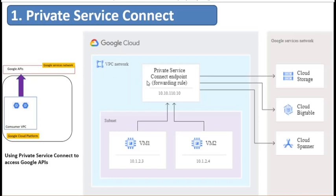On the right-hand side is the picture from the Google official document depicting this scenario. Here we have two Compute Engine VMs with only internal IP addresses sitting inside a subnet of your VPC network. In the same VPC network, we create a Private Service Connect endpoint with a global internal IP address. The connection between the VMs and the endpoint is private, while the external connection is managed by the endpoint to the Google Service Network. With this, the VMs do not expose their IP addresses to the service. But what if you want to restrict access to only certain APIs and services and specific regions?